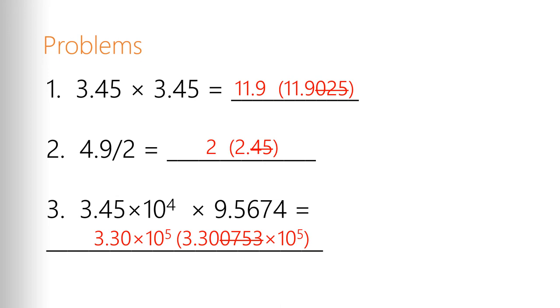The last one gives us 3.300753 times 10 to the fifth. I would learn to use scientific notation on your calculator. For those of you who have a TI calculator, it's probably either the EE or EEX key. That's what's used to do the exponential notation. And again, 9.5674 has five significant digits, but 3.45 times 10 to the fourth only has three. The 3.45 are the only things that count for significance. So my final answer can only have three significant figures, so it becomes 3.30 times 10 to the fifth.